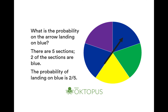Let's move on to the question on the spinning wheel. What is the probability of the arrow landing on blue? Looking at the spinner on the right, there are five sections and two of the sections are blue. The probability of landing on blue is two out of five — or 100 divided by five multiplied by two — which is 40 percent.